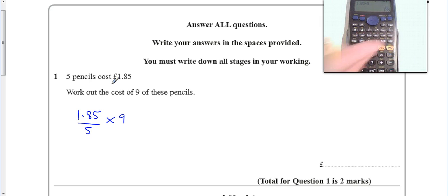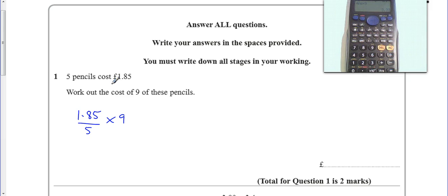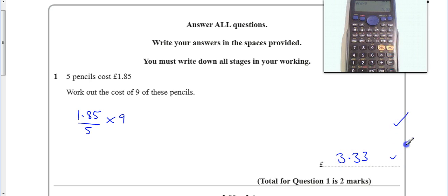So that is the cost of one calculator — it's 37 pence. Times it by 9 and we get £3.33. £3.33 for our two marks: one for the calculation, one for doing it correctly. That's it.